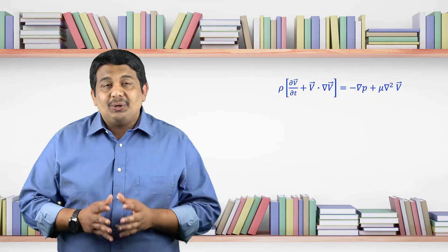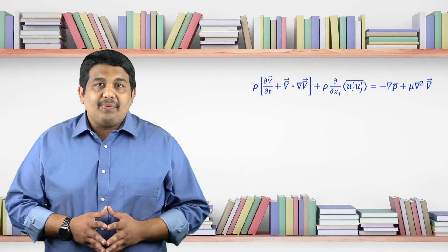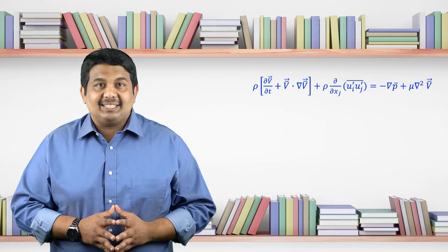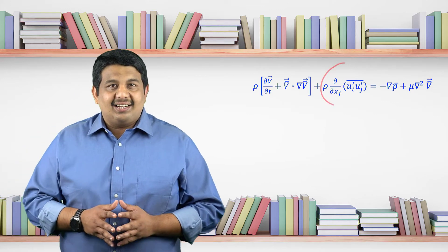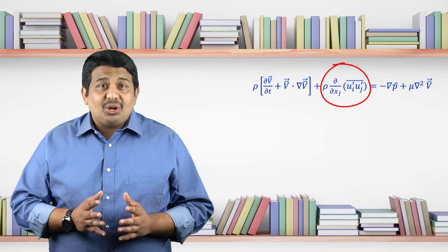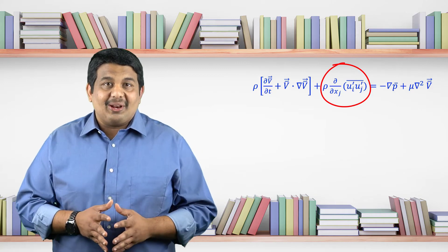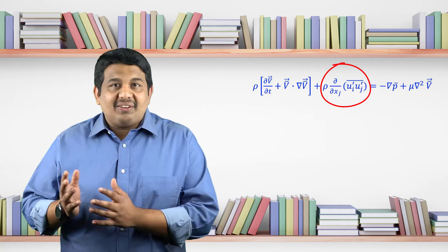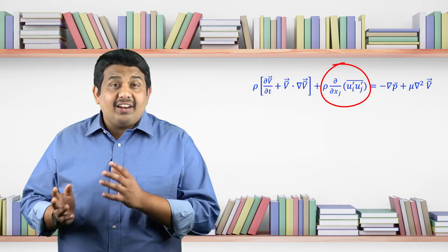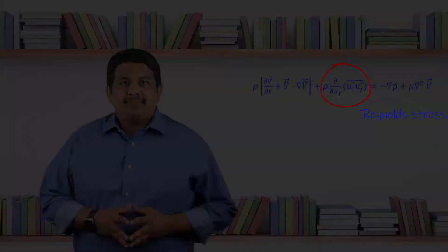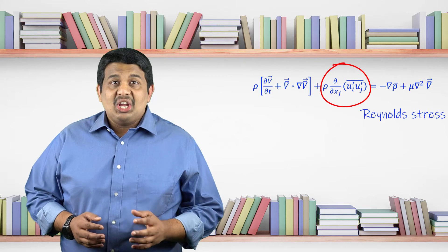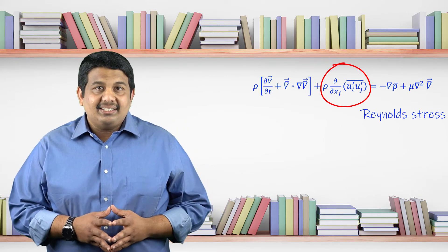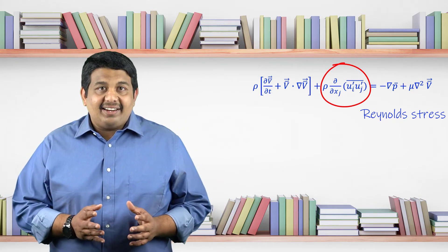Let us apply the same technique to the momentum equation. After removing and rearranging the terms, we arrive at the following equation, which is the RANS momentum equation. Notice the circle term. It is the time average of the product of fluctuating velocities. It can be thought of as a stress applied due to the fluctuating velocity field and is generally referred to as the Reynolds stress.